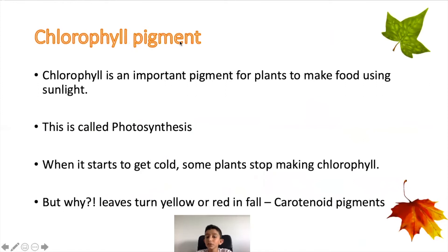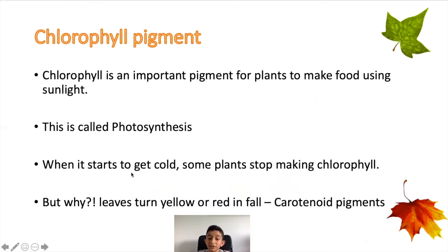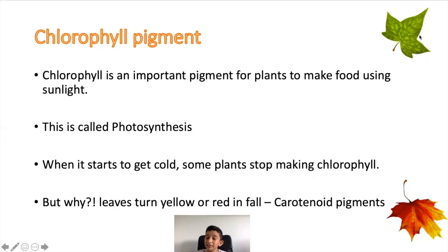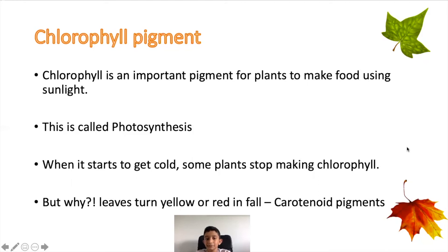Now I'm going to tell you how this happens — why they change color. It's because of chlorophyll pigments. Chlorophyll is an important pigment that plants use to make food using sunlight; this is also called photosynthesis. When it starts to get cold, some plants stop making chlorophyll, and because of carotenoid pigments, the leaves turn yellow or red and fall.